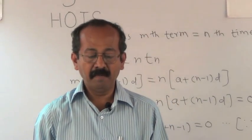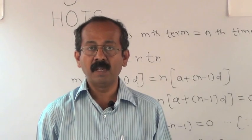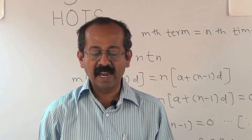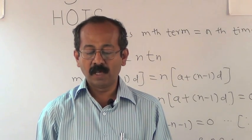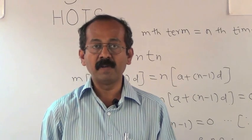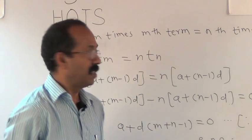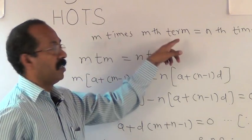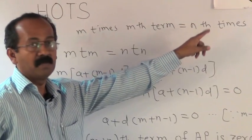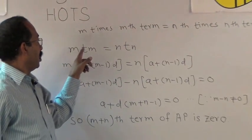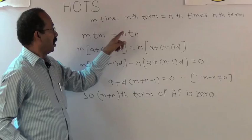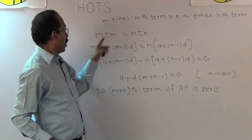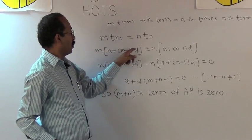Example 2: If m times the m-th term of an AP is equal to n times the n-th term of AP, then show that the m plus n term of AP is 0. Now it is given that m times the m-th term is equal to n times the n-th term. So m into Tm is equal to n into Tn.